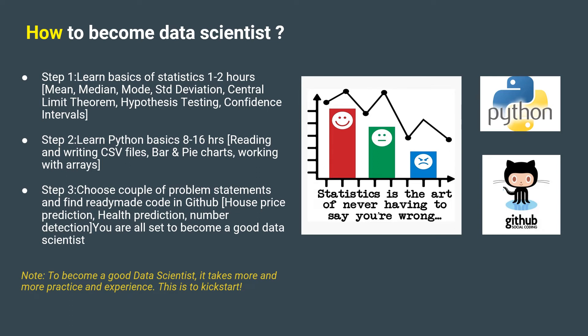The next step is to learn some Python. You can go to sites like W3Schools, where you can learn and try it on the website in a simple and easy manner. It may take a couple of days to a couple of weeks to get a hang of NumPy, Pandas, reading and writing CSV files, and drawing bar and pie charts. The last step is more exciting — apply the above two steps on your problem. You can go to GitHub or Kaggle and find ready-made working code for predicting cancer, house price analysis, or even face recognition.